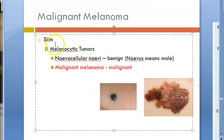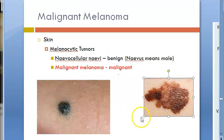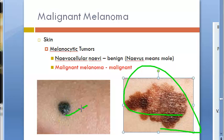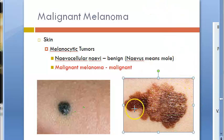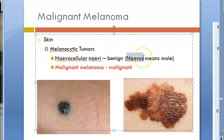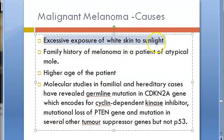In skin you have something called a nevus (N-A-E-V-U-S). A nevus is a mole — a benign condition. Malignant melanoma, on the other hand, is a malignant condition. You can see it is asymmetric, has very irregular margins, and the color is also varying. These are the features of malignant melanoma. In the exam, write both: nevus and malignant melanoma.